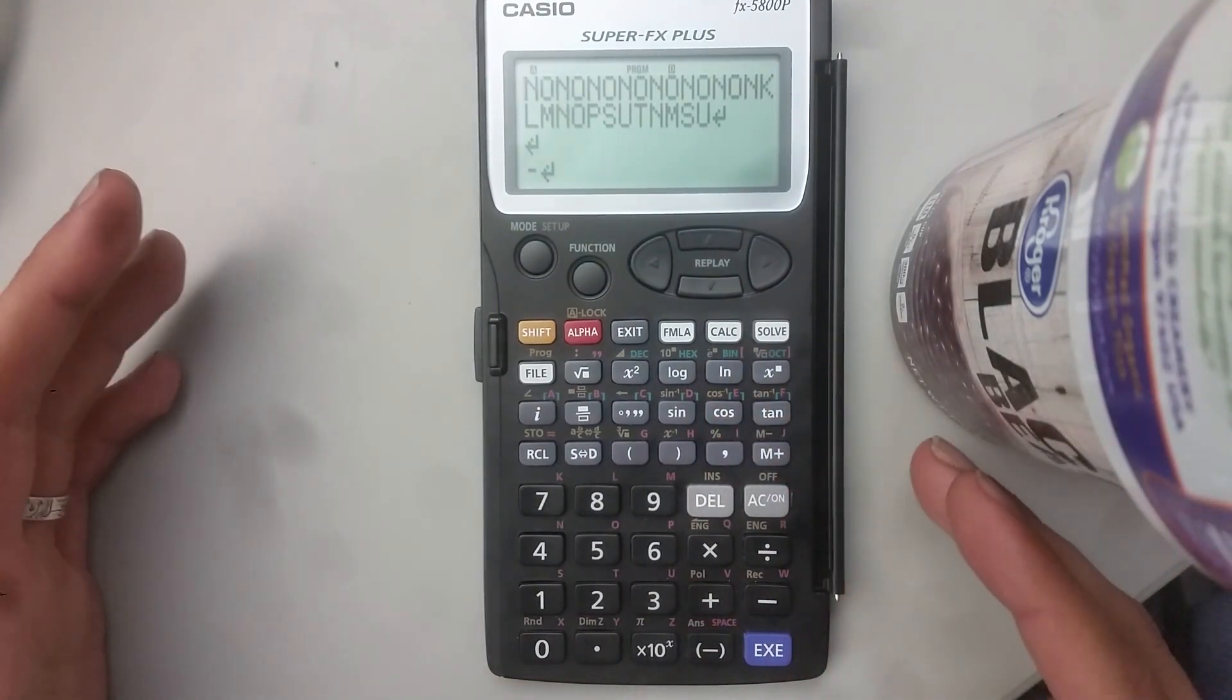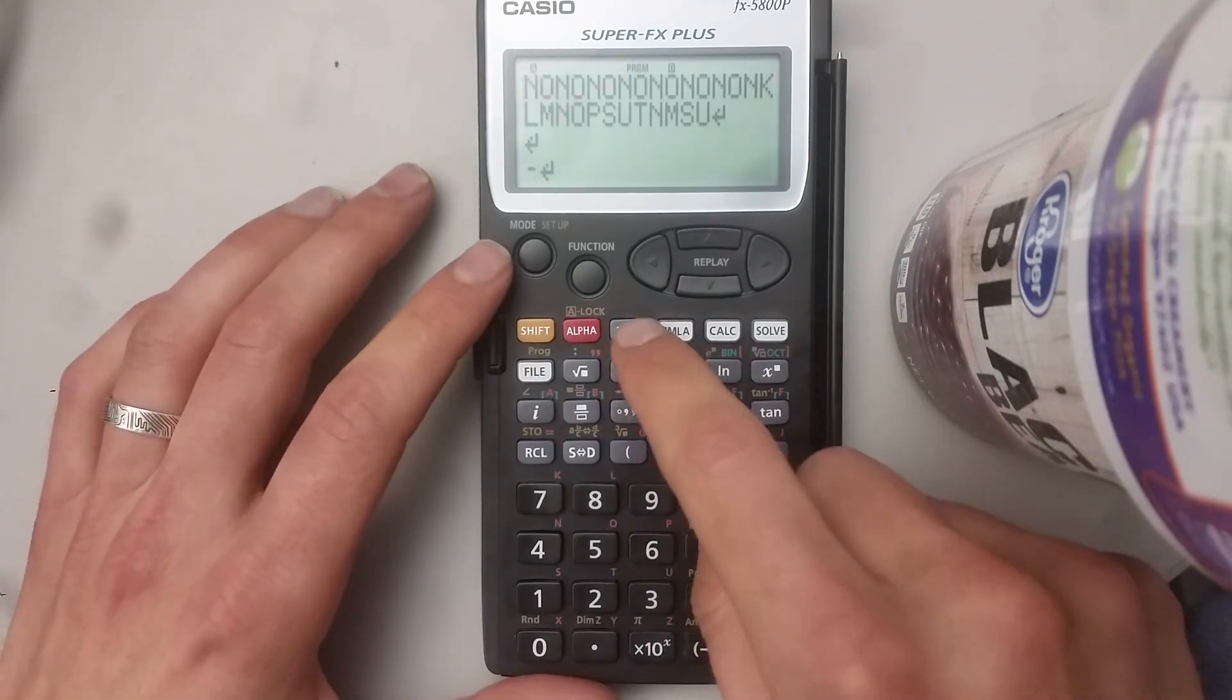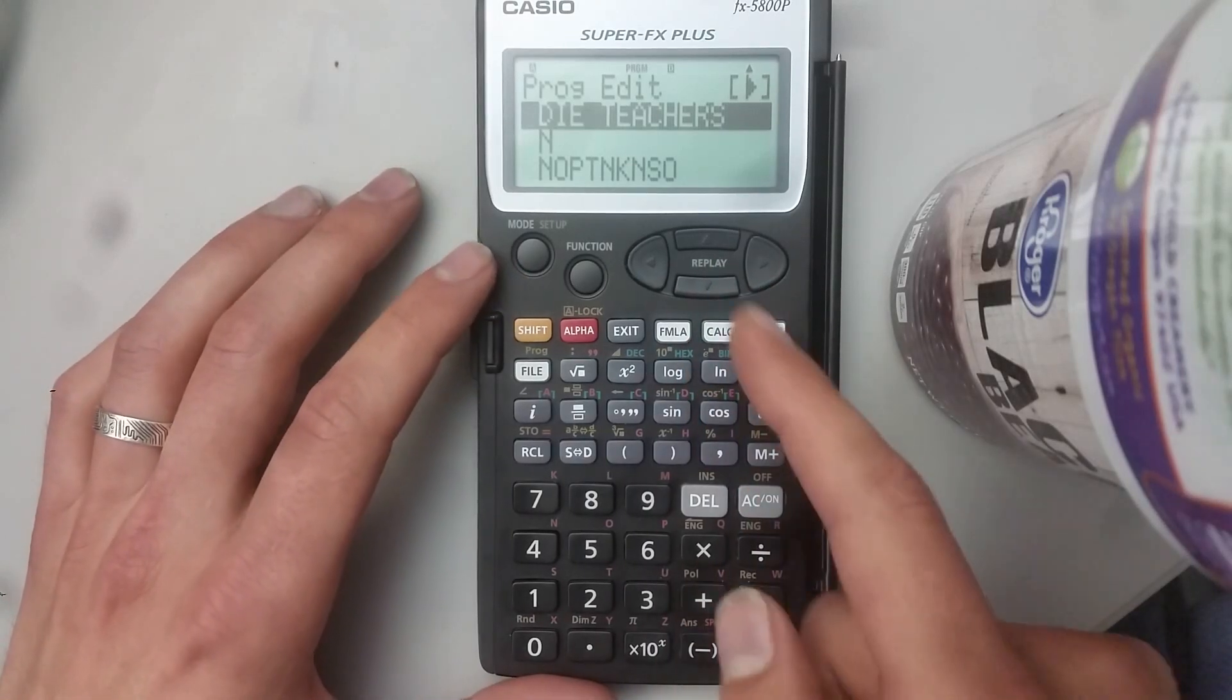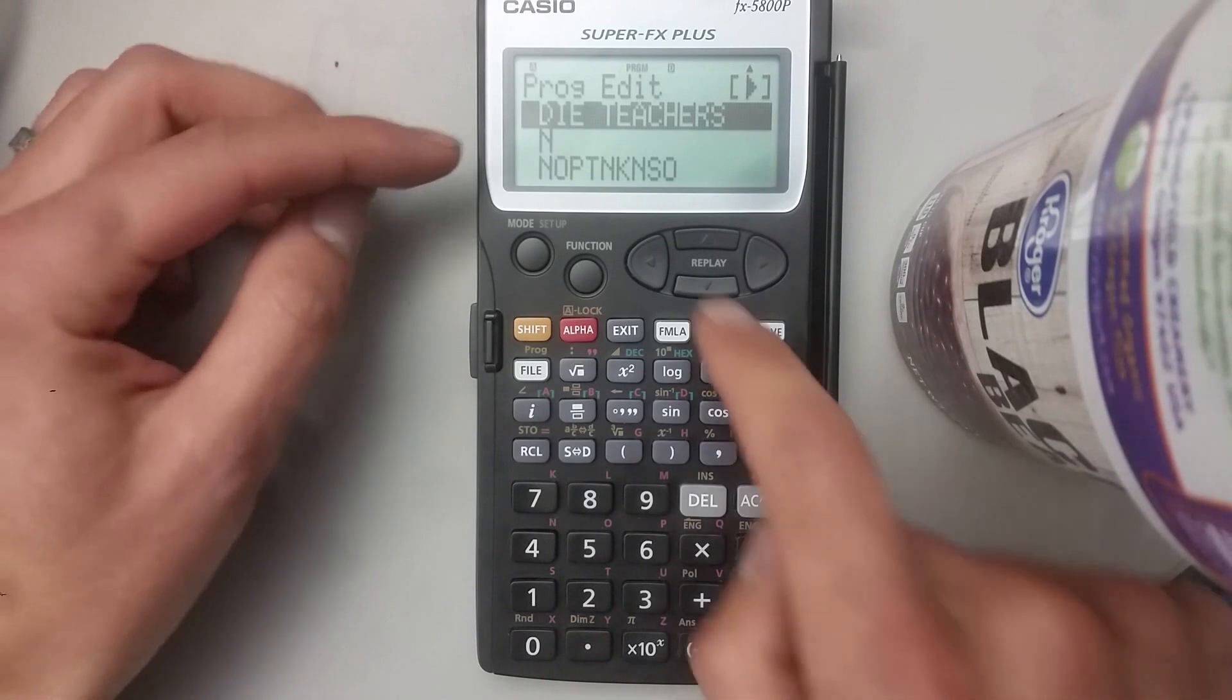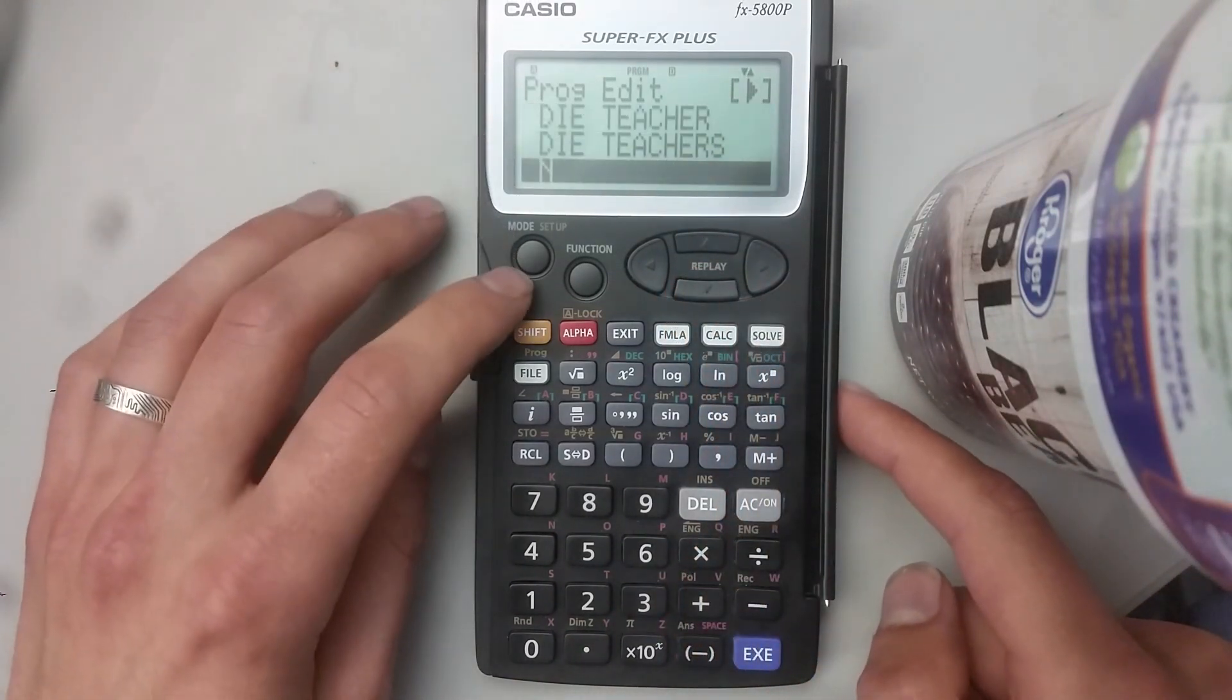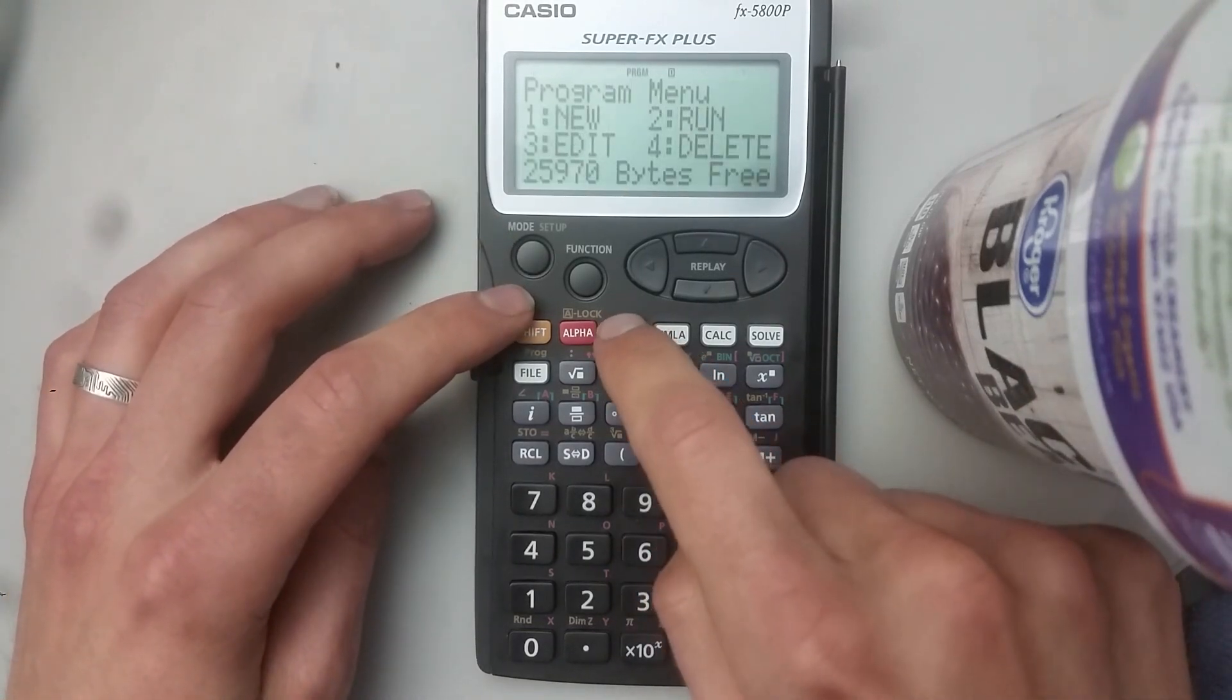From here you don't actually have to save the program once you're finished. You'll just go and you'll hit exit and it brings you out to the program edit file list. And it will give you a list of all the files that you had created. And now we'll go from there, let's just exit out, exit out.